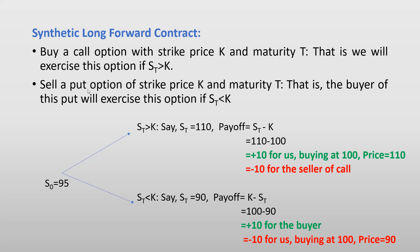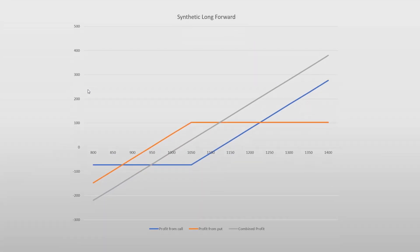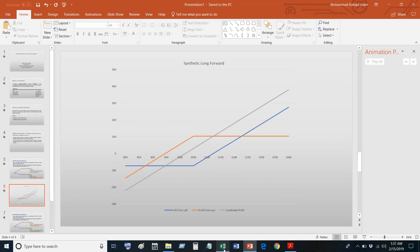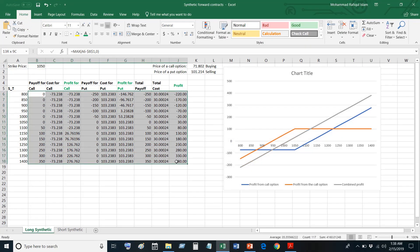So when the price goes up we make a profit, and when the price goes down we make a loss. That's the graph for the synthetic forward contract. Let me show you how we can generate the data and corresponding graph for the synthetic long forward using Excel.